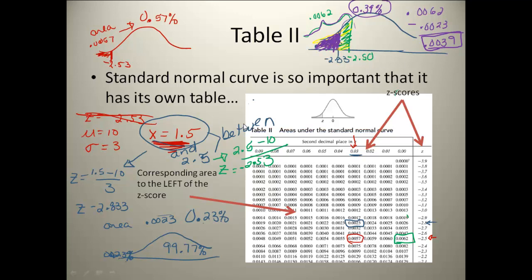You can find a lot of different things using the standard normal curve. You can find percentages of values to the left, use the complement rule to find values to the right, and use subtraction to find values in between. But any time you want to use Table 2, you have to standardize first — you have got to find those z-scores before you use this table.